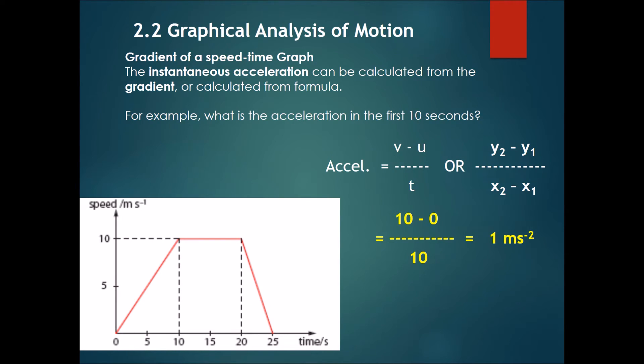Now, the second method is taking the gradient, which is the gradient of this line. So we take two points that are on this line. This point and this point. y2 minus y1 over x2 minus x1. So the coordinates of the first point are 0, 0, which is x1 and y1. And the coordinates of the second point are 10, 10, which is x2 and y2. Once you complete this calculation, you will once again find that you get the same result as the first formula, 1 ms per second squared.